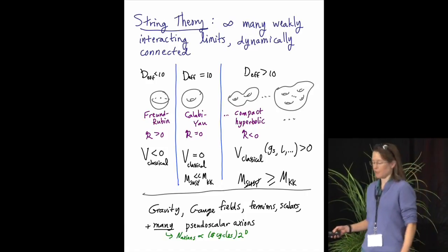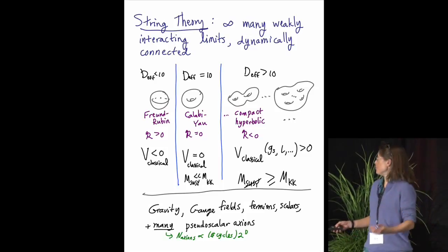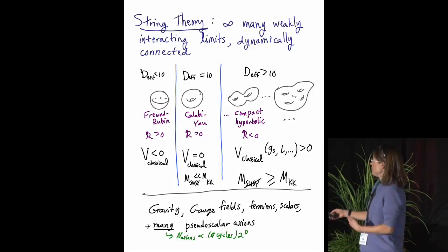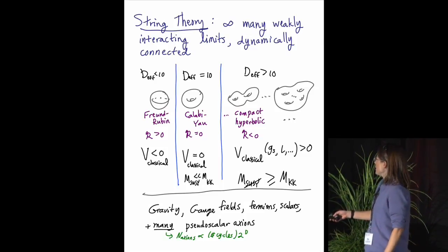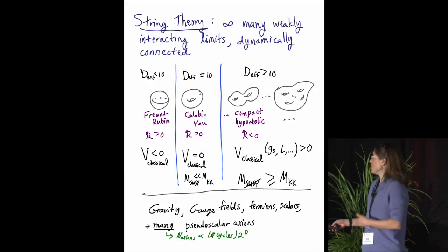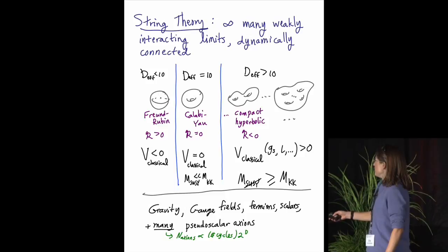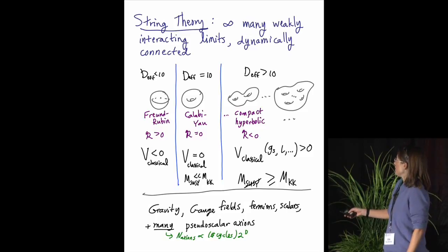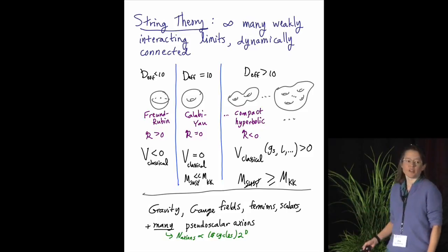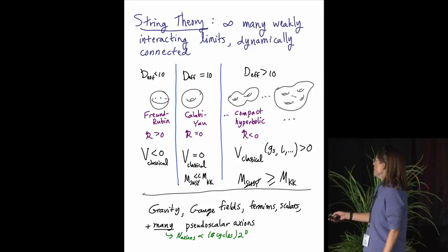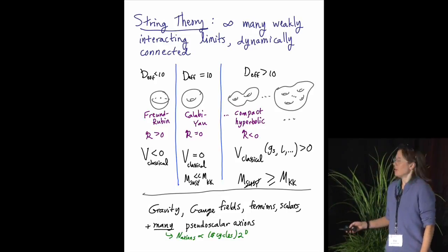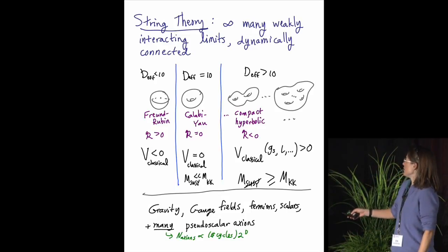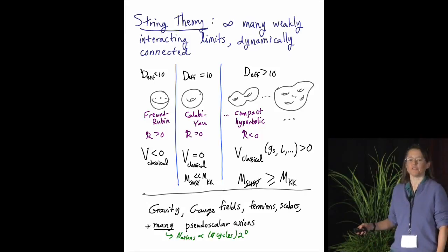The different backgrounds can be roughly classified in terms of whether the extra dimensions in their internal space generates a negative classical vacuum energy or scalar potential function, one that's zero classically, or one that's positive. And a lot of the effort in the field goes into the case of 10-dimensional compactifications on flat manifolds, which gives you low energy supersymmetry, or even negative potential energy, giving the ADS-CFT solutions.